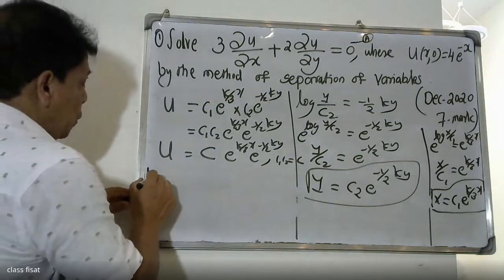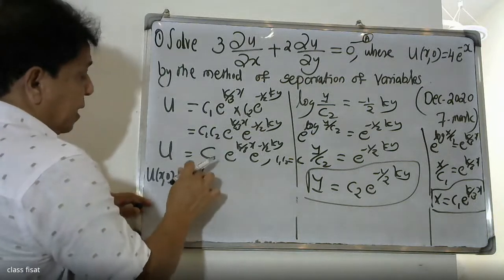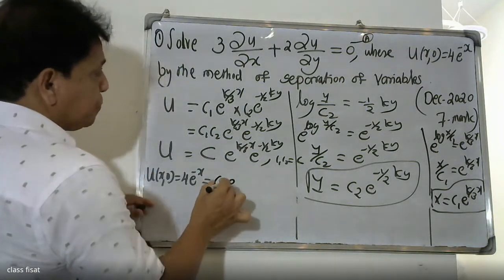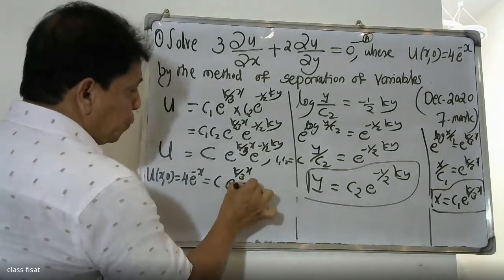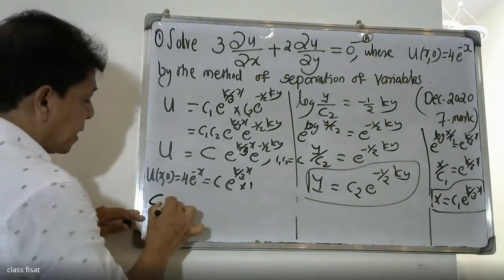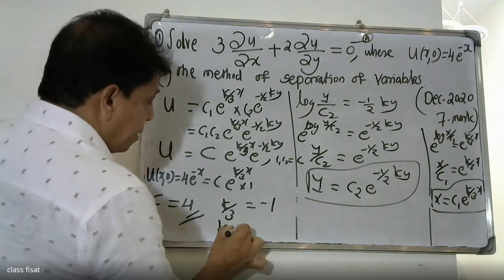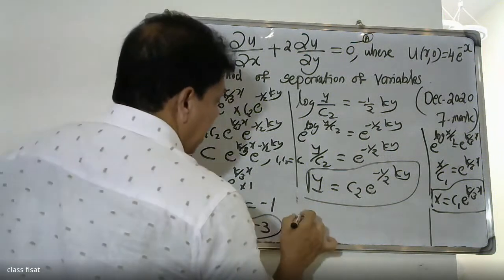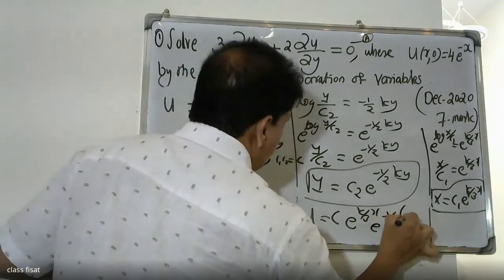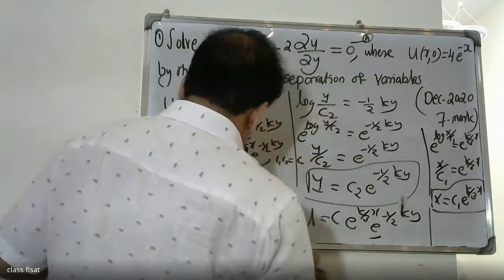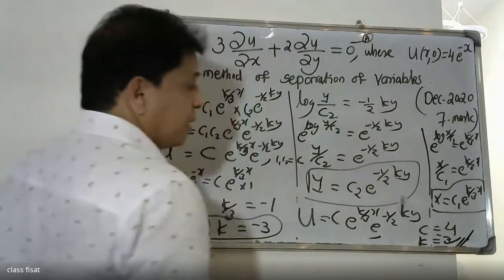The boundary condition is u(x, 0) = 4·e^(−x). Substituting y = 0: u = c·e^(k/3·x)·e^0 = c·e^(k/3·x). Comparing with 4·e^(−x): c = 4 and k/3 = −1, so k = −3.